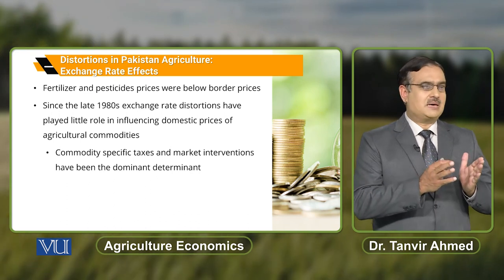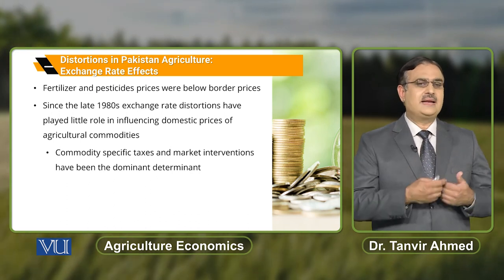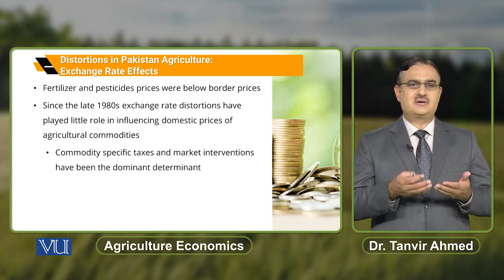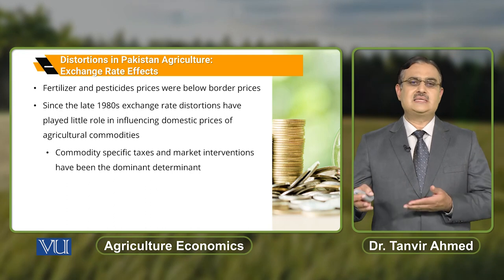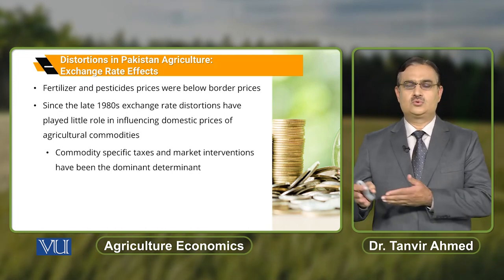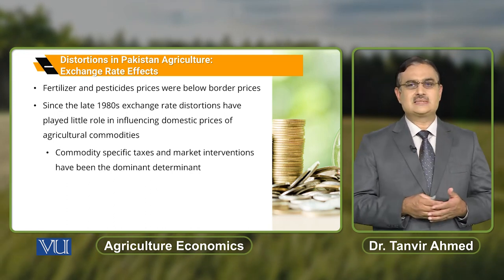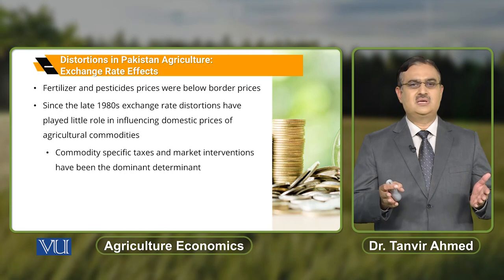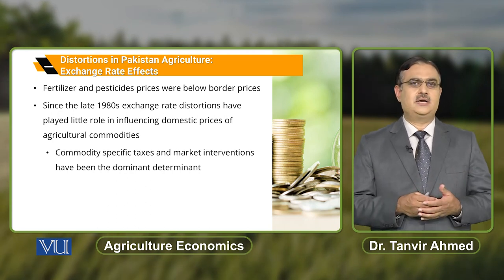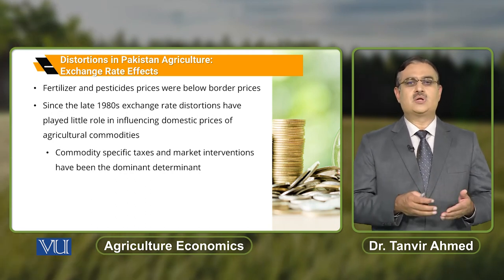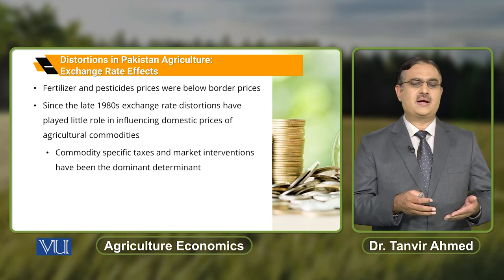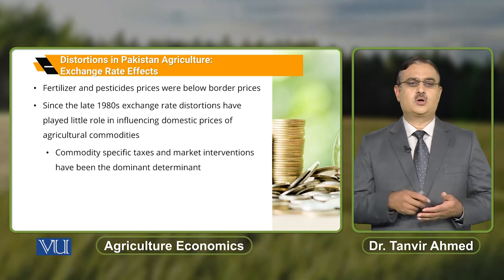When it comes to agricultural inputs, fertilizer and pesticide prices were also set below the border price — the government sets the prices of these agricultural inputs below the border price.